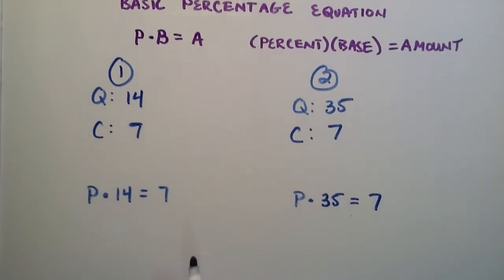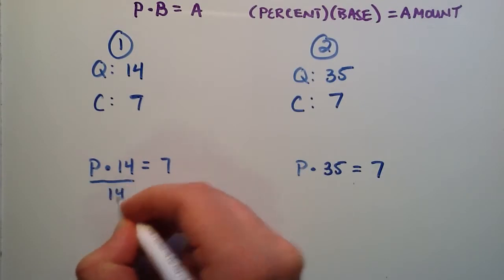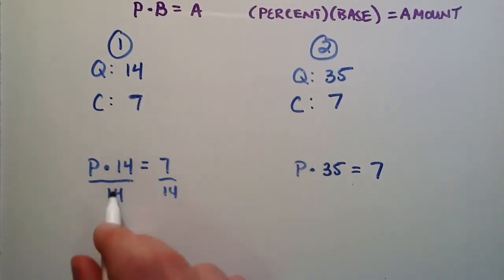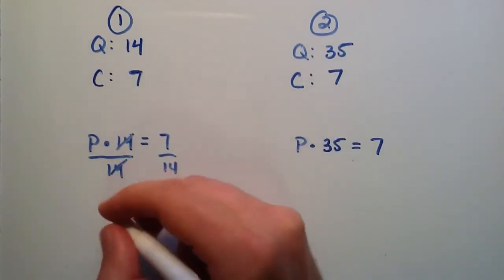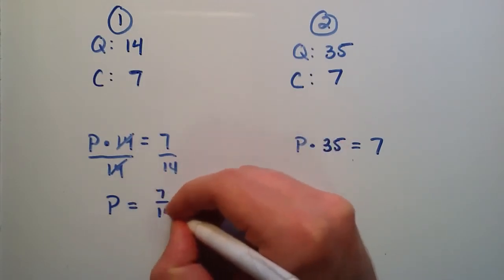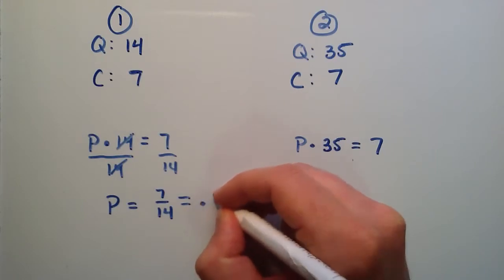Now we just use some basic algebra. We're going to divide each side by 14. And then 14 over 14 cancels, giving us P equals 7 over 14, which if we plug this in on our calculator equals 0.5.